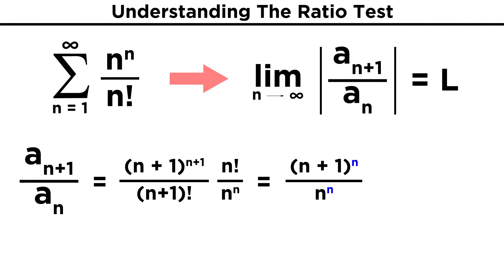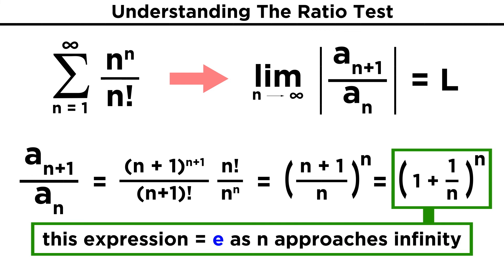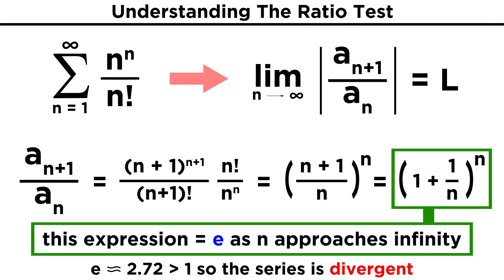Since these have the same exponent, let's pull it out to get n plus one over n, all to the n power. We just have to divide through by n to get one plus one over n, and recognize that this is actually equivalent to e, as was described earlier in the series. E, or Euler's number, is around 2.72, and that is greater than one, so according to the ratio test, this series must be divergent.